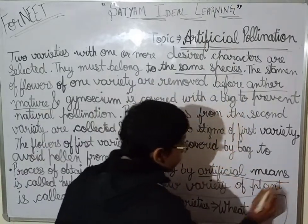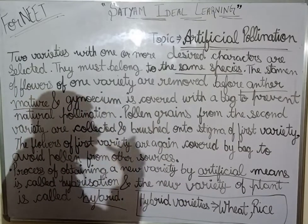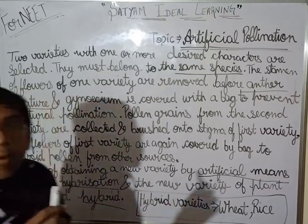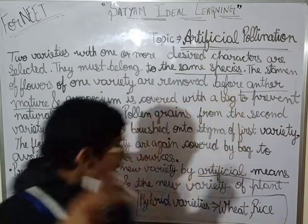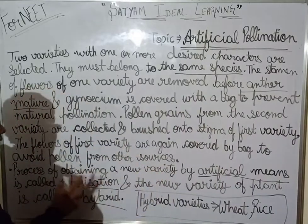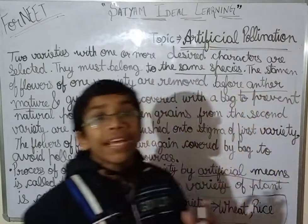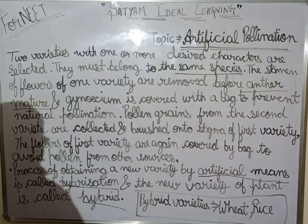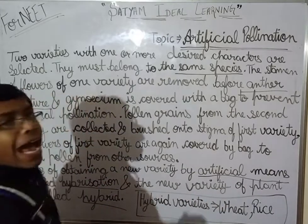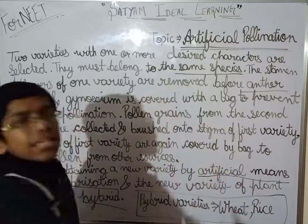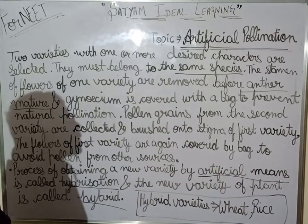The process by which we obtain a new variety by artificial means is called hybridization — the artificial means part is very important. The new variety obtained is known as a hybrid. Examples of hybrid varieties include wheat and rice.